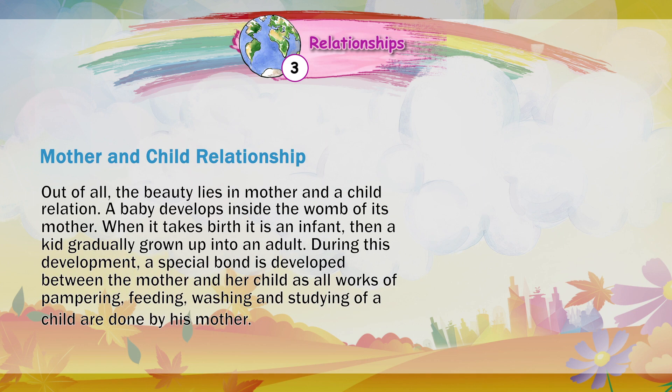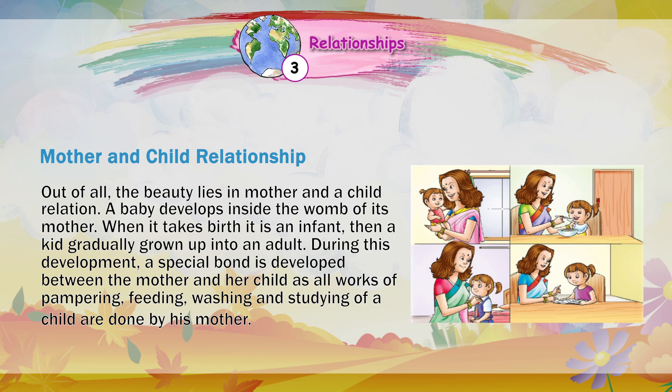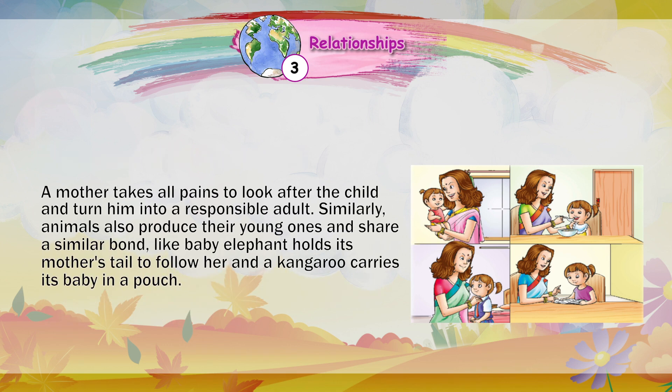Out of all, the beauty lies in the mother and child relation. A baby develops inside the womb of its mother. When it takes birth, it is an infant. Then a kid gradually grows up into an adult. During this development, a special bond is developed between the mother and her child, as all works of pampering, feeding, washing and studying of a child are done by his mother. A mother takes all pains to look after the child and turn him into a responsible adult.